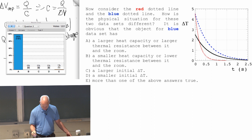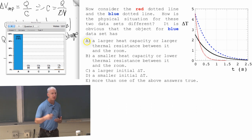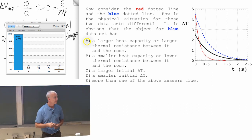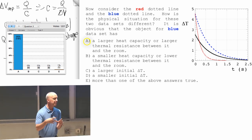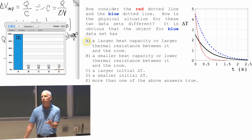And so the blue one is taking longer. Either because it has a larger thermal resistance, so there is a slower flow. Or it has a larger heat capacity, so even if there's the same flow, its temperature doesn't change very quickly.